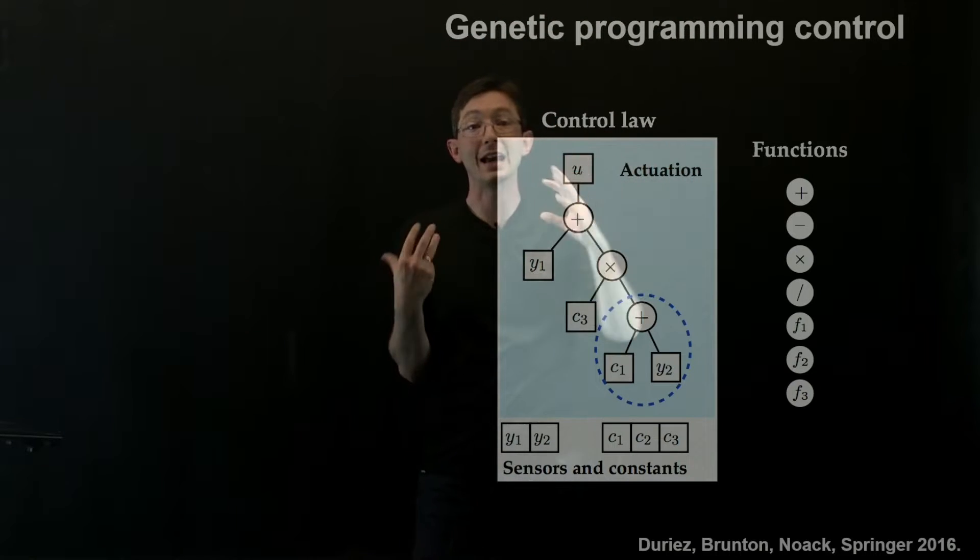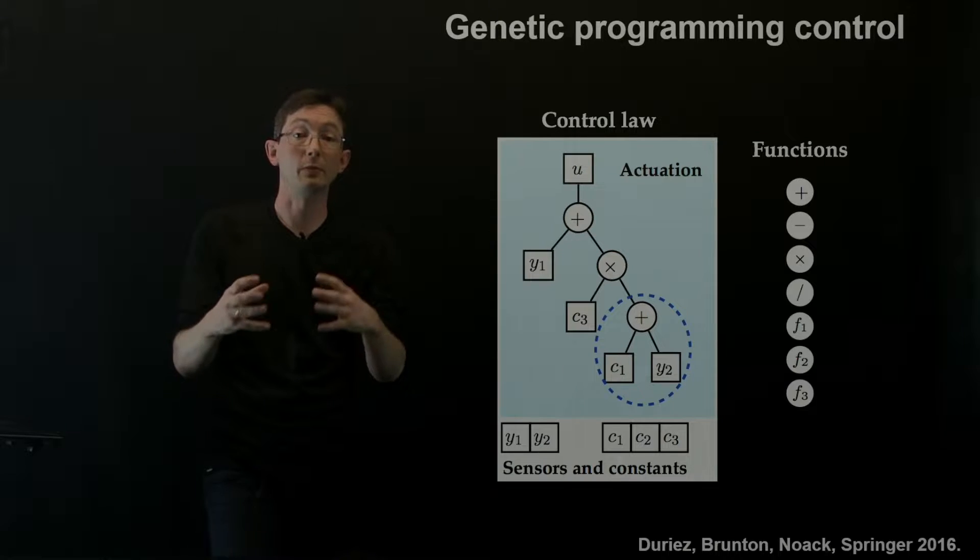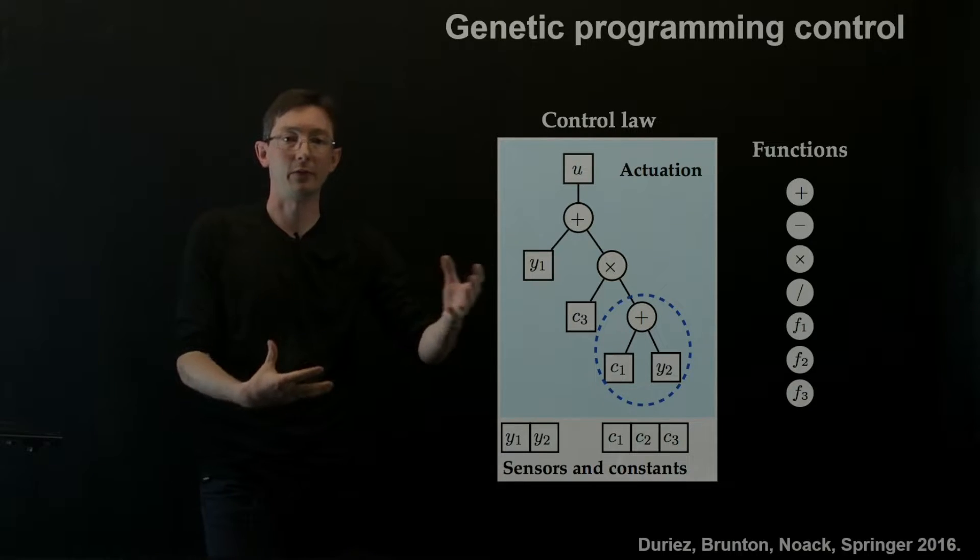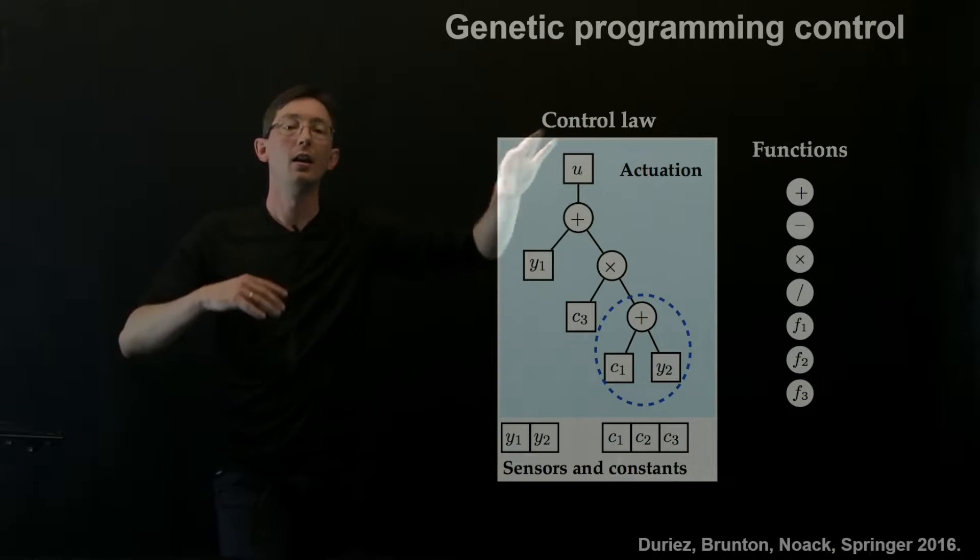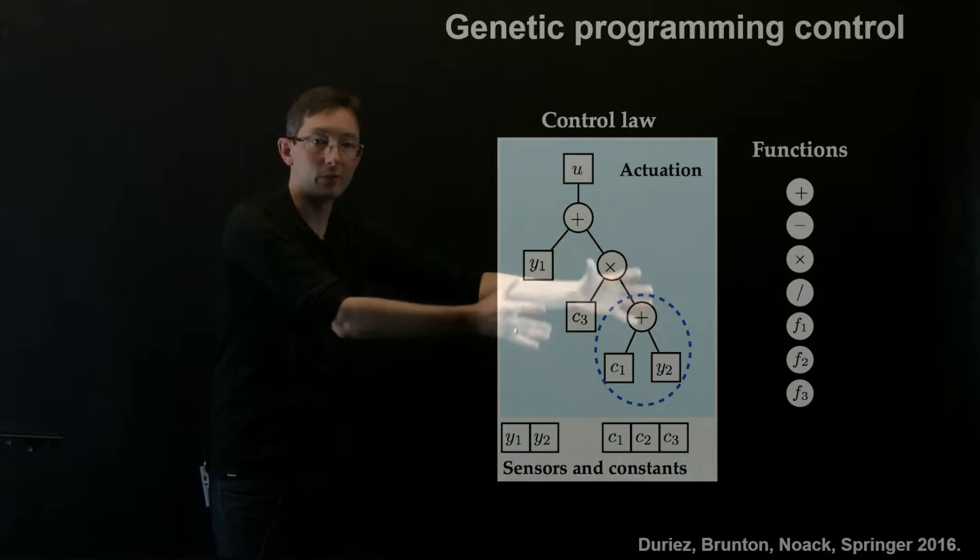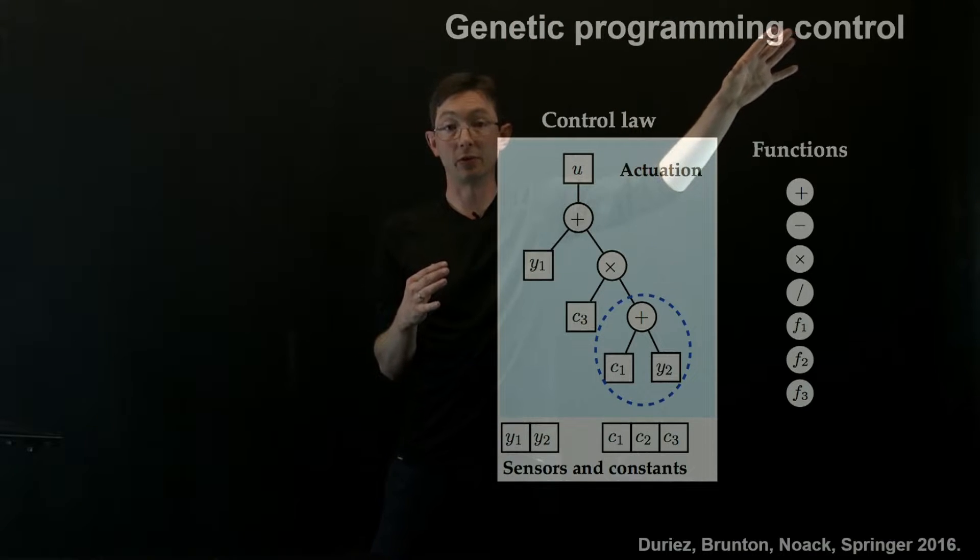So people have been using genetic programming for decades to design programs that write new programs, software that writes software and things like that, all kinds of interesting applications of genetic programming. I'm going to walk you through kind of the guts of how genetic programming works, but in the context of how we would use it for control.